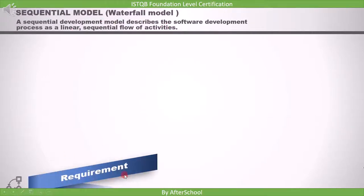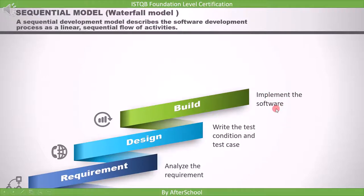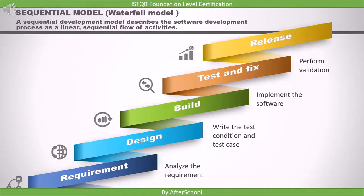The first activity in this model is the requirement activity, where we analyze the requirements. Then we go into the design phase, where we write test conditions and test cases. After that, we start building the software in the implementation stage. Once the software is ready, we go into testing to test for defects and fix any found. Finally, the software is released to the customer.